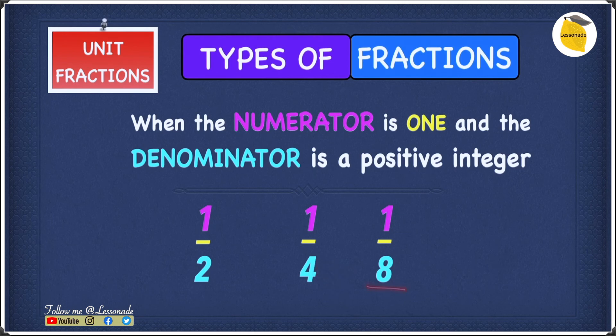And 1 over 8: 1 is the numerator, and 8 is a positive integer. So 1 over 2, 1 over 4, and 1 over 8 are all unit fractions.